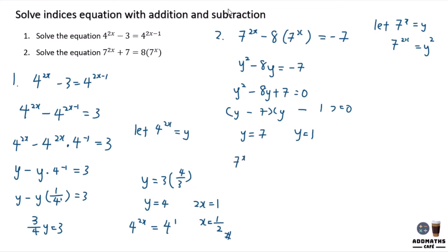Since y = 7^x, for the first solution: 7^x = 7^1, so x = 1.